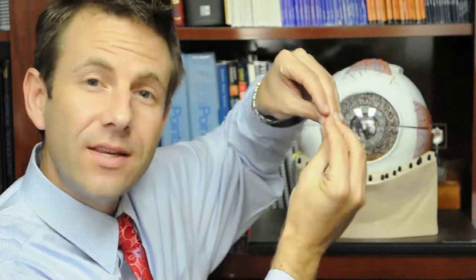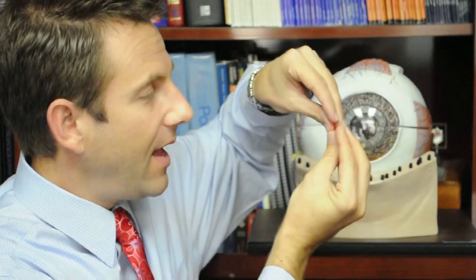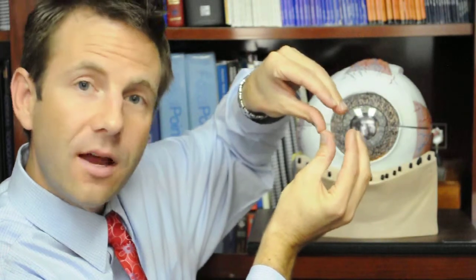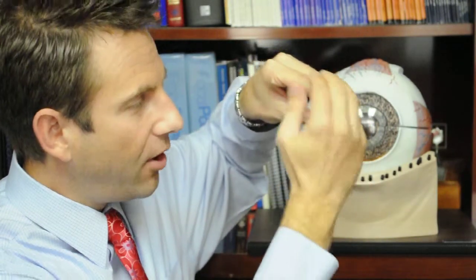Where the cornea is too steep, this incision goes through most of the depth of the cornea and allows it to open some and relax where that curvature is not so steep anymore.